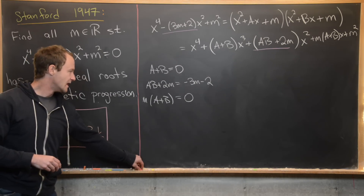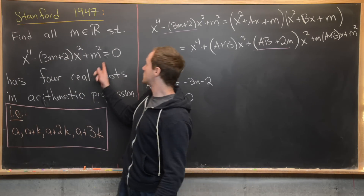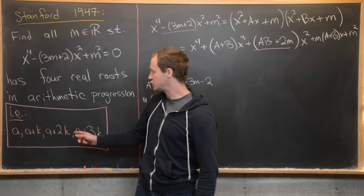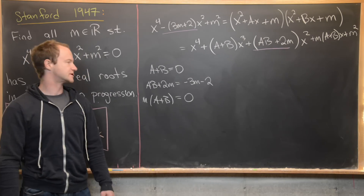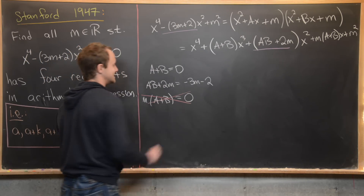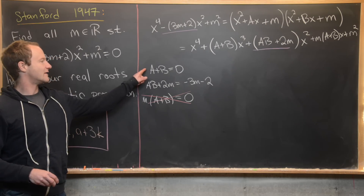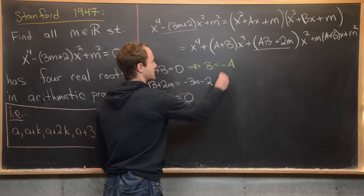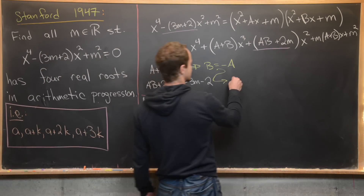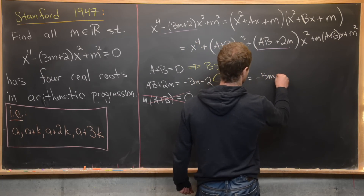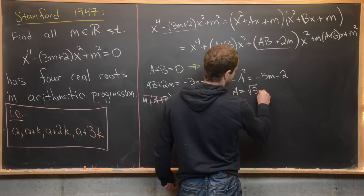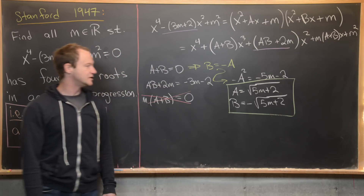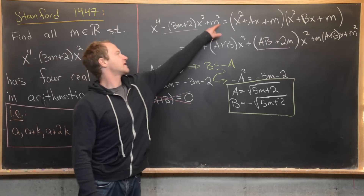If m = 0, two roots of the polynomial equal zero, and you can't have an arithmetic progression where two values are equal but not all four. So m = 0 is excluded. From a + b = 0 we get b = −a, and substituting into the other equation gives −a² = −5m − 2, so a = √(5m + 2) and b = −√(5m + 2).